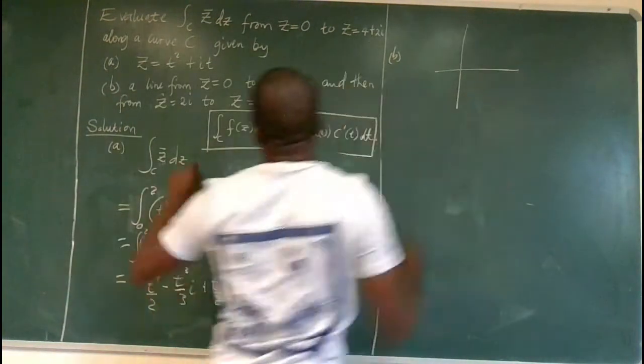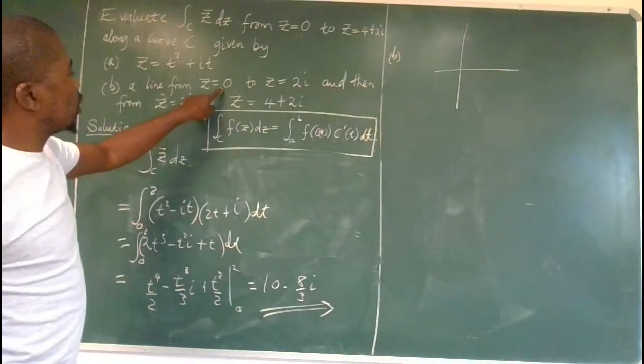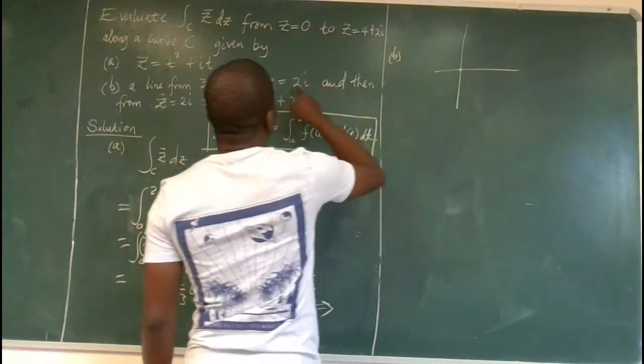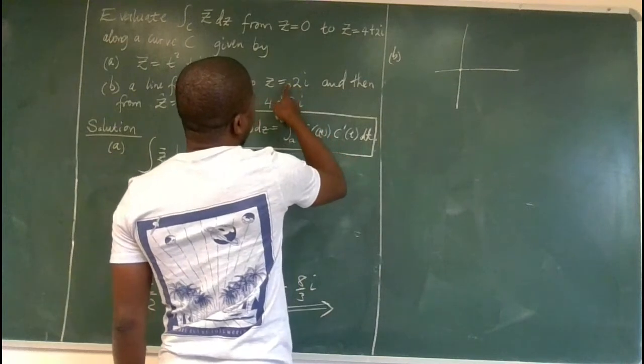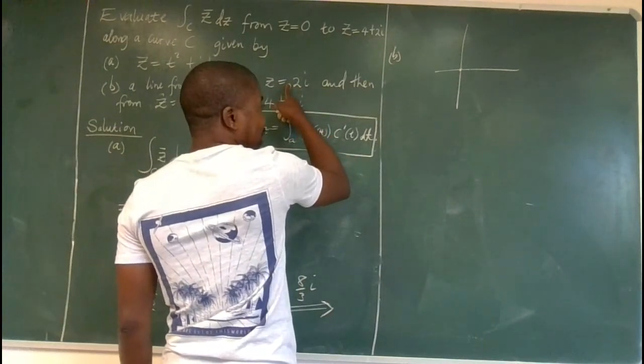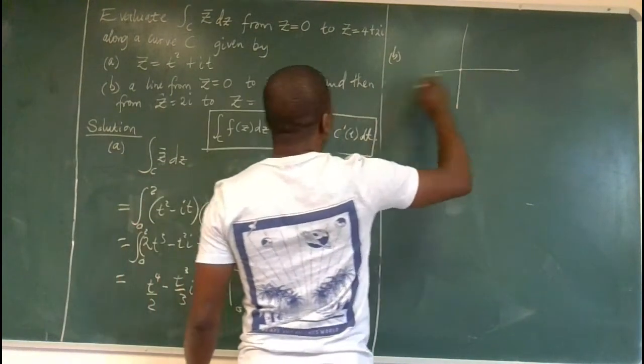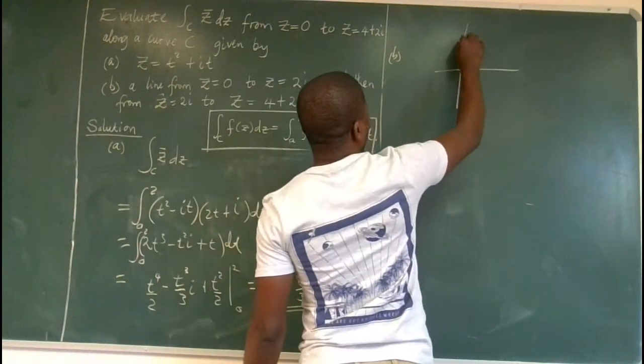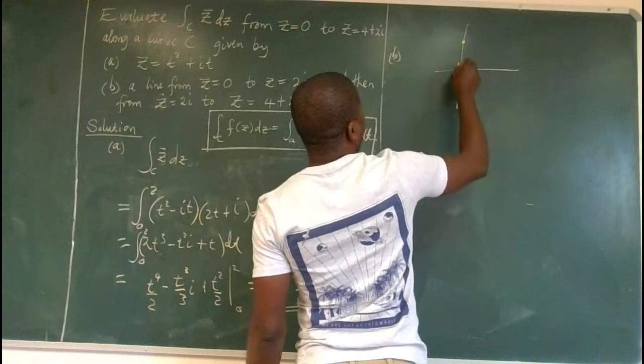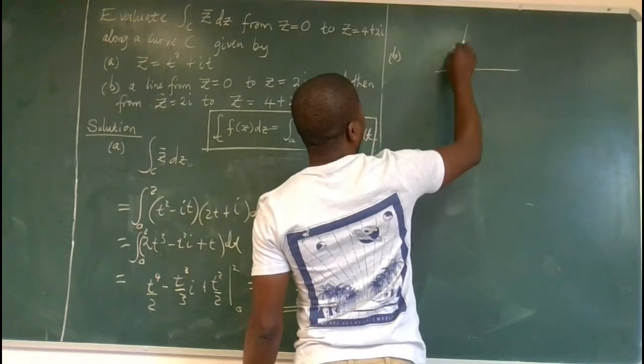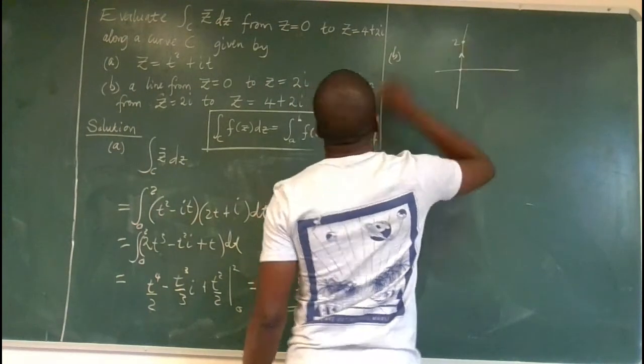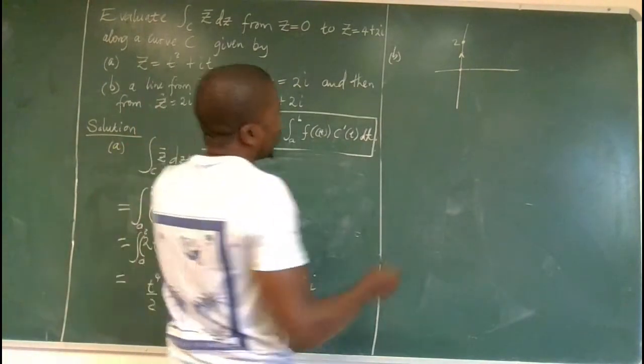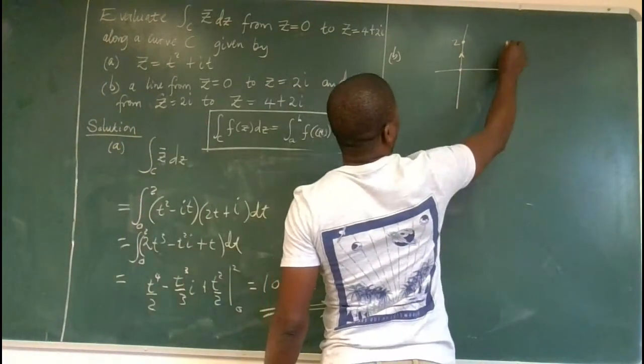We are moving from 0, 0, the origin, to 2i. So this is the origin. Where is 2i? So 2i, x component is 0. The real part is 0. So we are not on the x axis. But on the y axis, we are on point 2. So it's from here to here.